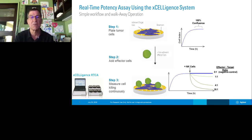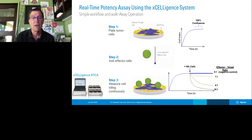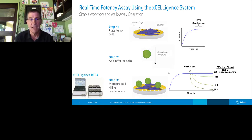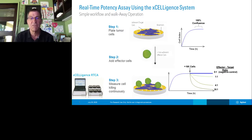We start by putting our tumor cells on the plate and let them grow for a day or so. This entire setup exists in the incubator, so you can run multi-day experiments. After we get our tumor cells going, we add our T cells. The T cells, because they float above the tumor cells, do not interfere with that electrical field, giving you an extremely specific readout of tumor cell death and cytotoxicity. The effector-to-target ratios are much more physiologic — other technologies require two-to-one or ten-to-one ratios, but here you can go very, very low.